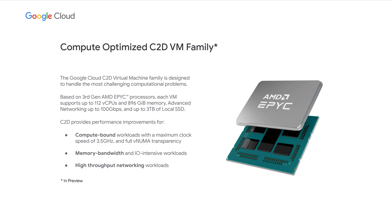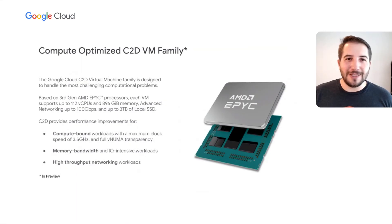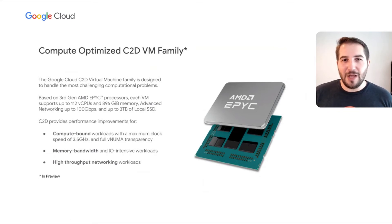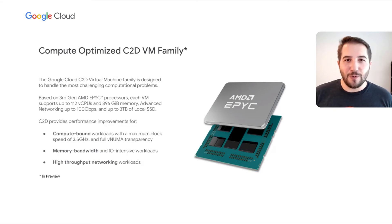Finally, the C2D VM family is currently in preview, powered by AMD EPYC third-generation processors. Each VM offers up to 112 vCPUs and 896 gigabytes of memory. Key HPC features include advanced networking for up to 100 gigabits per second of throughput on larger VMs and up to 3 terabytes of local SSD. The 3.5 GHz maximum clock speed and full vNUMA transparency to the underlying NUMA topology allows compute-bound applications to perform optimally. High memory bandwidth combined with local SSD and advanced networking means memory and I/O-intensive workloads can see dramatic acceleration as well.